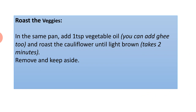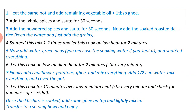Heat the same pot, add the remaining vegetable oil and one tablespoon ghee. Add the whole spices and stir for 30 seconds, then add the powdered spices and salt for 30 seconds. Now add the soaked roasted dal and rice — keep the water aside and just add the grains — and stir for two minutes, one to two times, and let cook on low heat for two minutes.